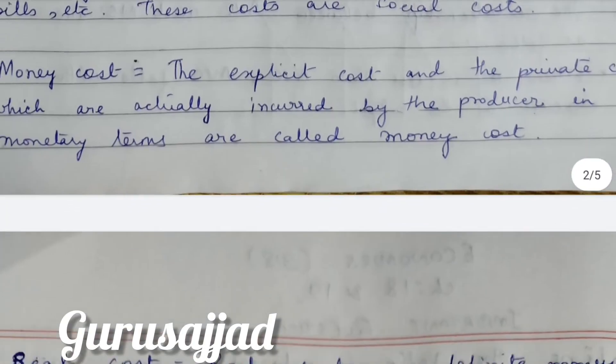Next is money cost. The explicit cost and the private cost which are actually incurred by the producer in monetary terms is called money cost. So the combination of explicit cost and private cost — all the expenditure a producer makes to produce goods — we call that money cost.